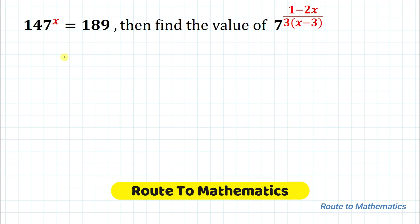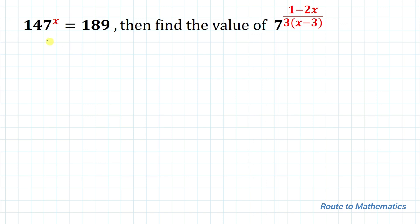Hello everyone, welcome to Root2 Mathematics. In this video I am going to solve this quick exponential equation. So we have given that 147 to the power x equals to 189. Then find the value of 7 to the power 1 minus 2x divided by 3, multiplied with x minus 3. So without any delay let's start the solution.